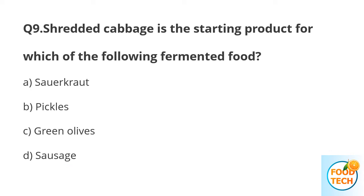Question number 9. Cabbage is the starting product for which of the following fermented foods? A. Sauerkraut. B. Pickles. C. Green olives. D. Sausage.